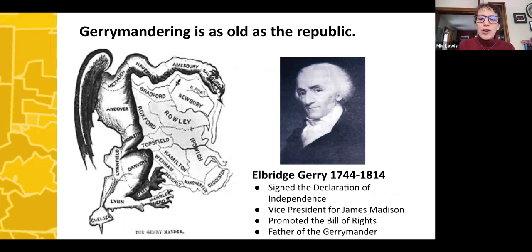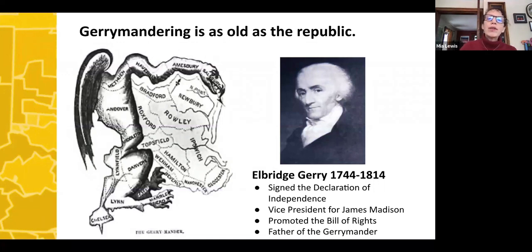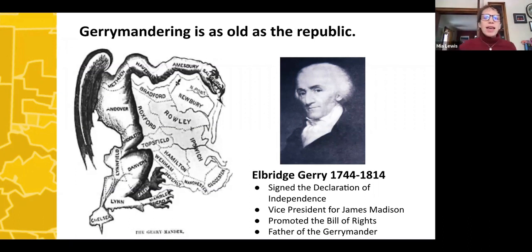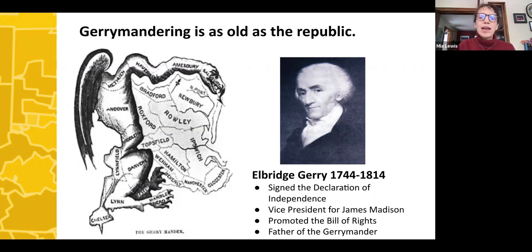The origin of the term 'gerrymandering' comes from Elbridge Gerry, who was around from the very beginning — he signed the Declaration of Independence. He figured out that if you drew a district in a distorted way, grabbing your people and pushing the opposition into other areas, you could come out on top. Because the resulting district looked very strange, a political cartoon of the day called it a gerrymander, like a salamander. And we're still dealing with this today.